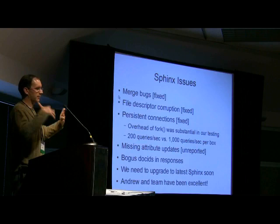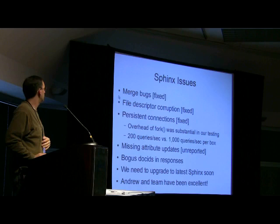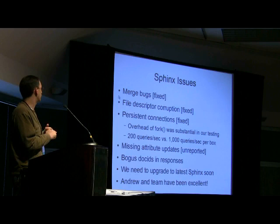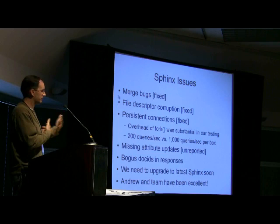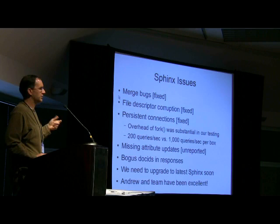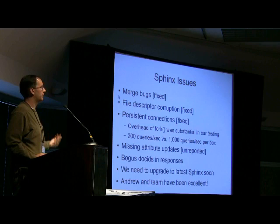There were some issues along the way. There were bugs with the merge code — it's a good feature but I don't think it had been widely used, since a lot of people use the Sphinx storage engine inside MySQL rather than the standalone daemon we use. There was also a file descriptor corruption bug that took a while to track down; that's been fixed. Persistent connections are now in mainline code. There are a couple of bugs I'm not fully convinced are Sphinx or my code — occasionally missing attribute updates, occasionally getting bogus document IDs back. Having a checksum in the protocol would help, similar to how MySQL replication benefits from checksums. But Andrew and the team have been great — any time I found a bug and built a test case, it was fixed pretty quickly.